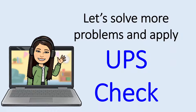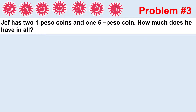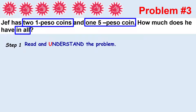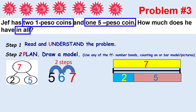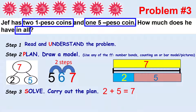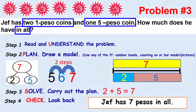Let's solve more problems and apply UPS check. Jeff has two one-peso coins and one five-peso coin. How much does he have in all? Understand the problem — read with understanding and box important words. Then plan — draw a model using number bonds, counting on, or bar models. Solve — carry out the plan and show the addition sentence: two plus five equals seven. Then check — did you answer the question? Yes, Jeff has seven pesos in all.